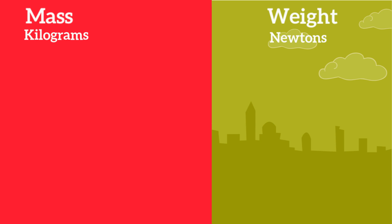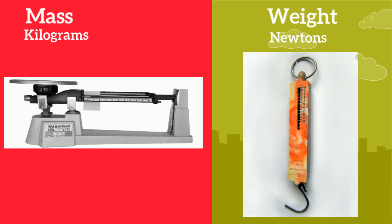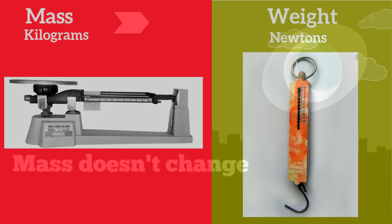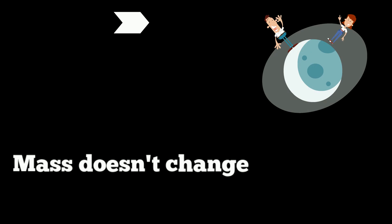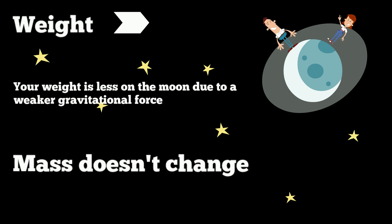Mass is measured by using a balance, comparing a known amount of matter to an unknown amount of matter. Weight is measured on a scale. The mass of an object doesn't change when an object's location changes, but weight on the other hand changes with location.